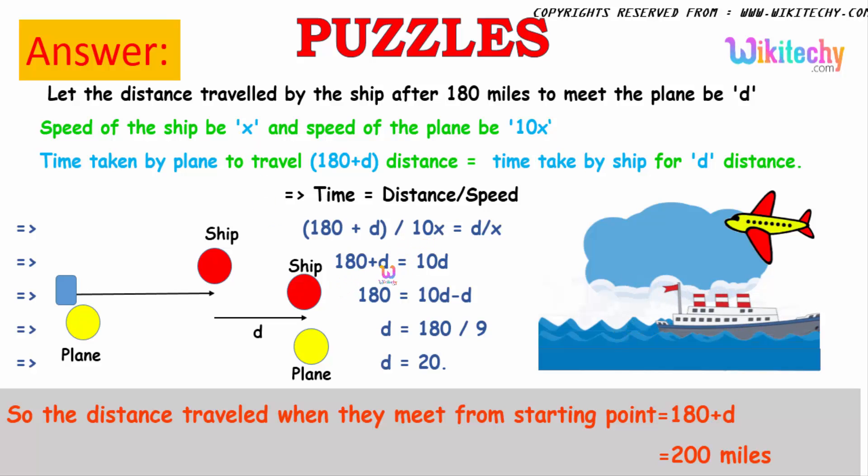So solving it, the x terms will be tallied and cancelled. We will be getting 180 plus d is equal to 10 into d. So 180 is equal to 10d minus d. Plus will become minus here. And d is equal to 20.